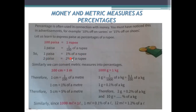Similarly for metric measures: one meter equals 100 centimeters, so one centimeter equals 1 by 100 of a meter, meaning one centimeter is one percent of a meter and five centimeters is five percent of a meter. For mass, 1000 grams equals one kilogram, so one gram equals 0.1 percent of a kilogram, two grams equals 0.2 percent, and ten grams equals one percent of a kilogram.